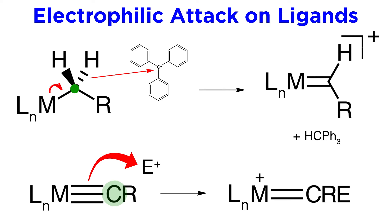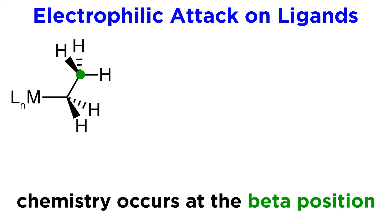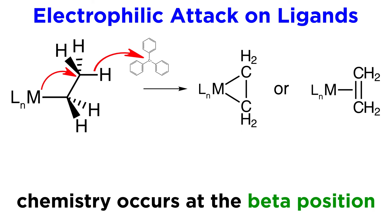Now in both of these situations chemistry is occurring at the position alpha to the metal, but chemistry can occur at the beta position as well. Here we see an alkyl ligand and the trityl cation, but this time the metal can attack this beta carbon, kicking off a hydride from this position to protonate the electrophile. This will result in an ethene ligand, with pi to metal dative bonding as shown here.